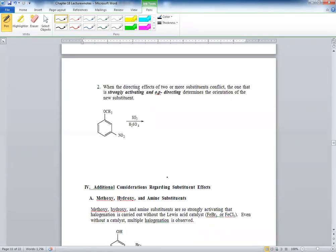The next thing is, what if you have two groups on the benzene ring? When the directing effects of two or more substituents conflict, the one that is strongly activating and ortho-para directing determines the orientation of the substituent.